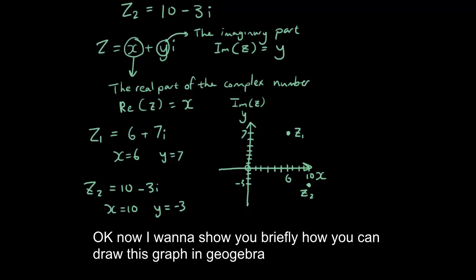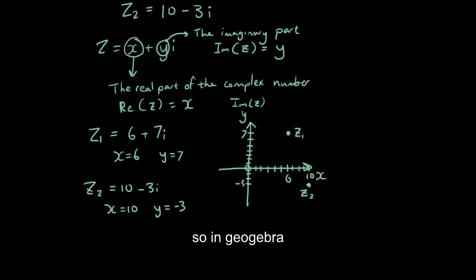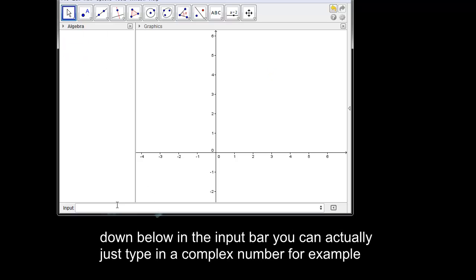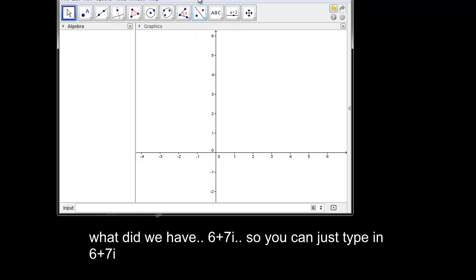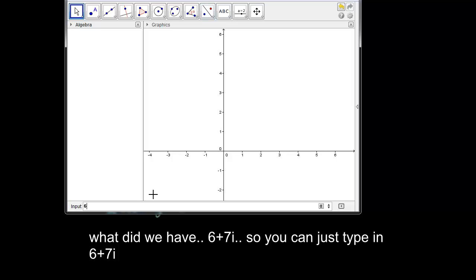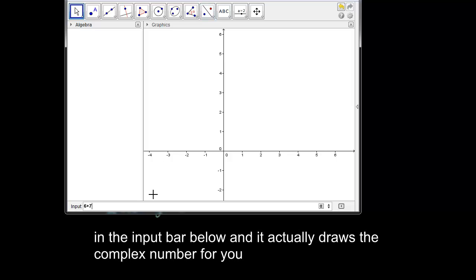Okay now I want to show you briefly how you can draw this graph in GeoGebra. So in GeoGebra, if you just clear everything that you have already on the screen, down below in the input bar, you can actually just type in a complex number, for example, what did we have 6 plus 7i, so you can just type in 6 plus 7i in the input bar below and it actually draws the complex number for you.